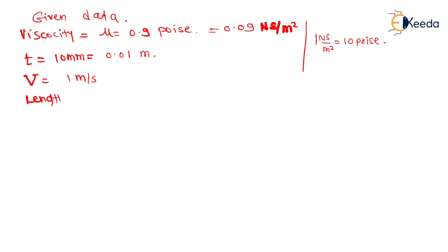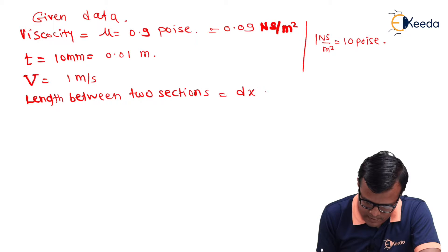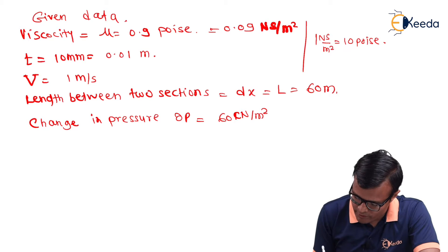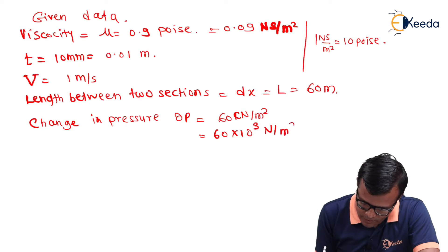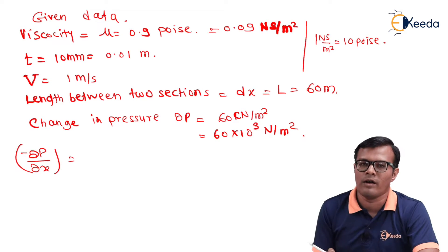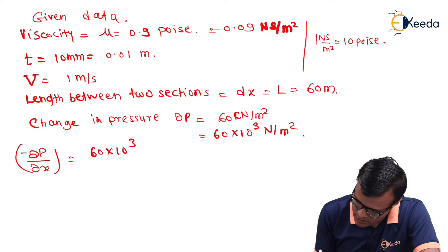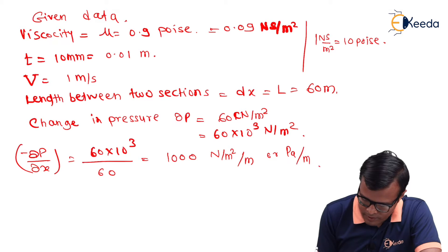Length between two sections dx = L = 60 meter and change in pressure dp = 60 kN/m². We have to convert it to N/m², so 60 × 10³ N/m². So, it is clear that dP/dx, this value is required in our formulae. So, we will calculate it first. That will be equal to 60 × 10³ divided by 60, that is 1000 N/m² per meter or Pa per meter.